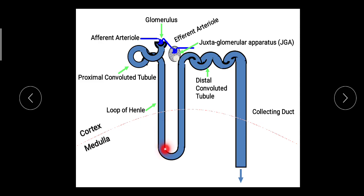Next, the filtrate reaches the loop of Henle, where it becomes diluted because half of the sodium and chloride ions get reabsorbed. Another site where sodium ions are reabsorbed is the distal convoluted tubule, where sodium cation is exchanged with potassium under the control of aldosterone. The last site is the collecting duct, where sodium ions from the renal tubular fluid are exchanged for potassium ions and, to a lesser extent, for hydrogen ions from the blood.